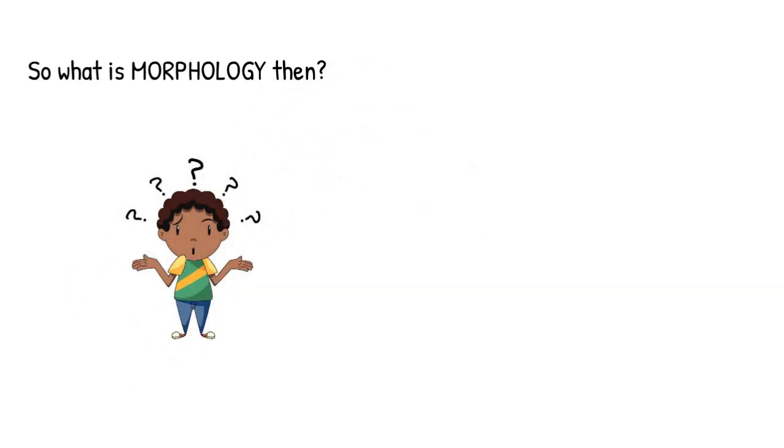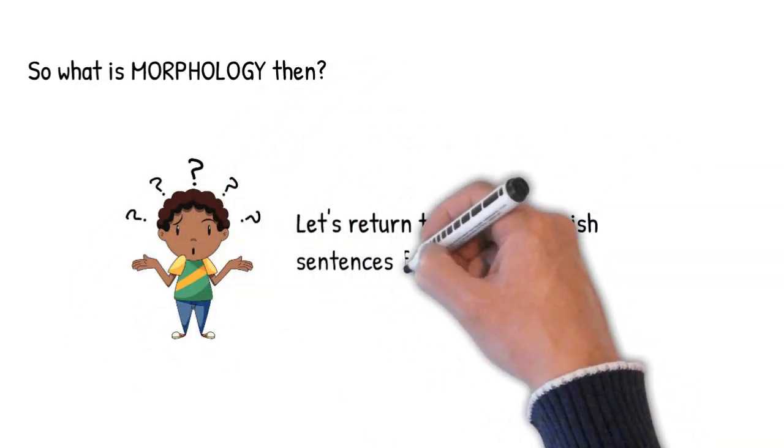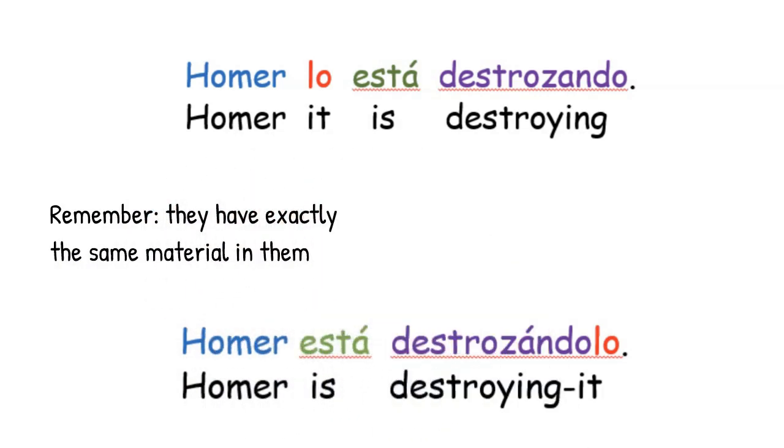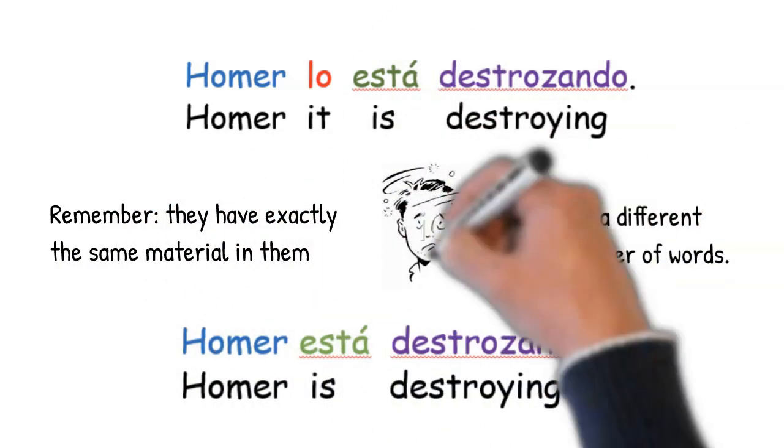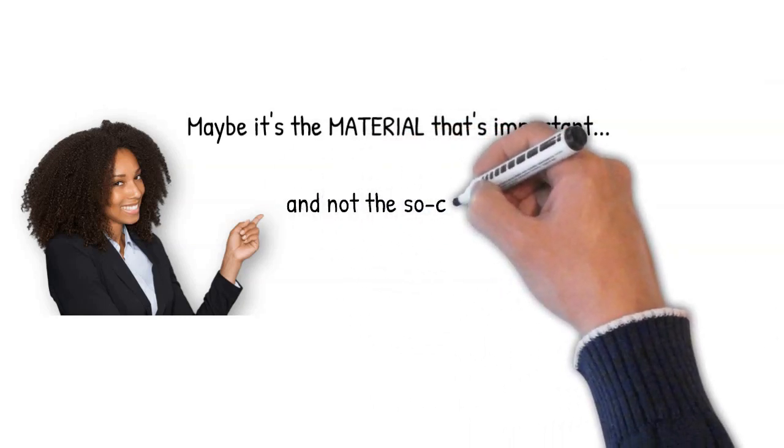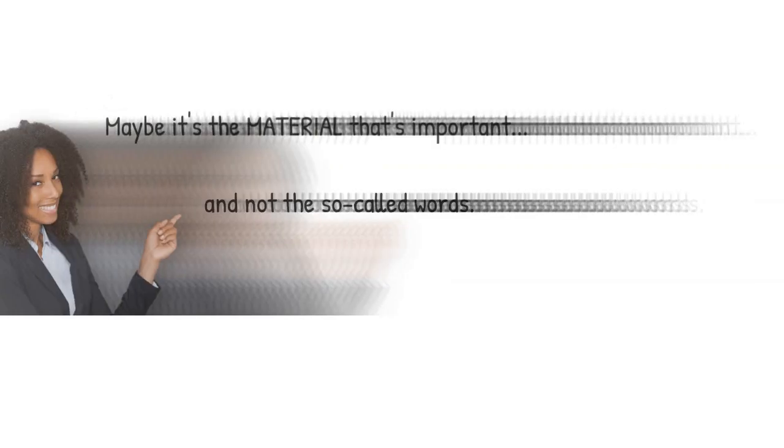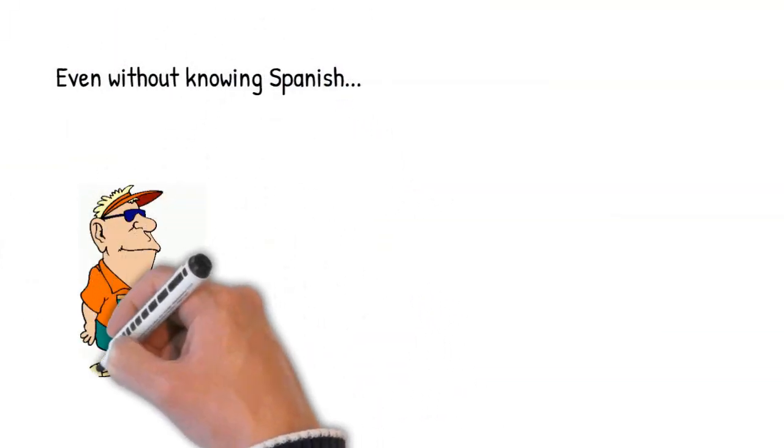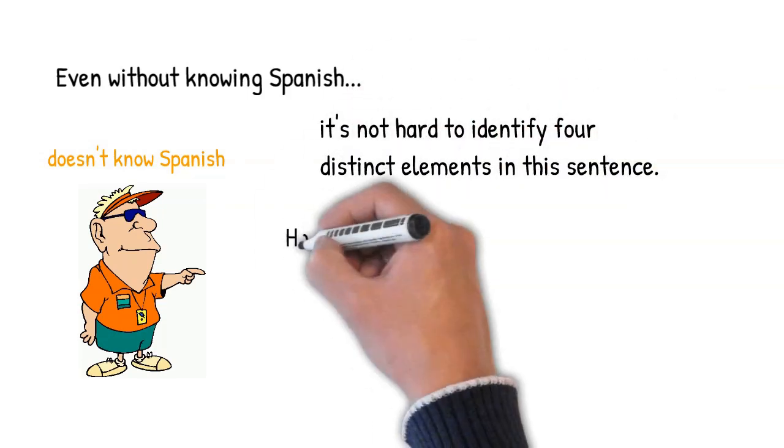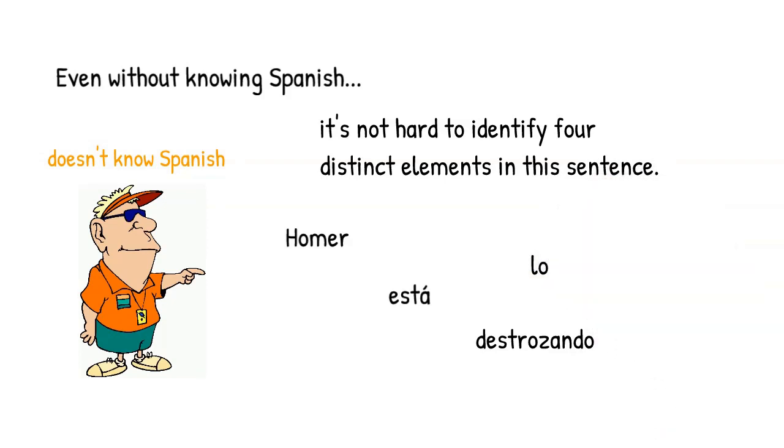So what is morphology then? Let's go back to our two Spanish sentences for a minute. And let's remember that they have exactly the same material in them. But they have a different number of quote-unquote words. Maybe the important concept here is the material rather than the so-called words. Even without knowing Spanish, it's actually pretty easy to identify four distinct elements in the sentence. We've got Homer, está, destrozando, and lo.